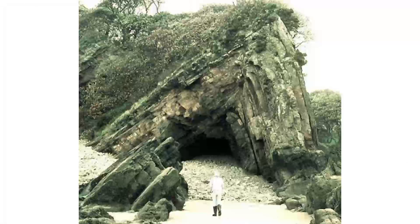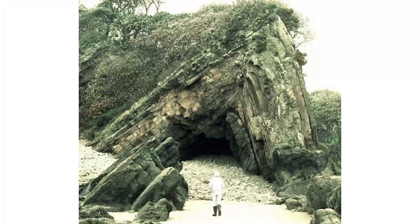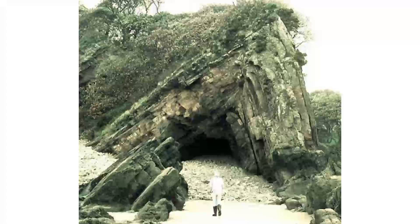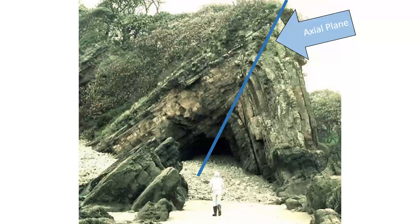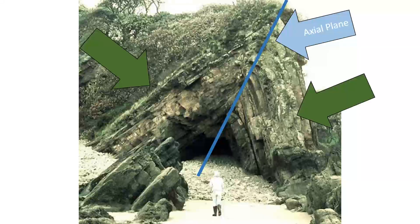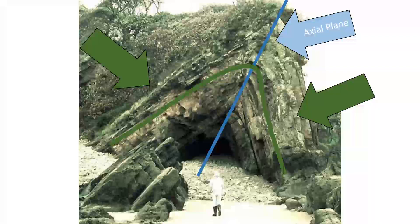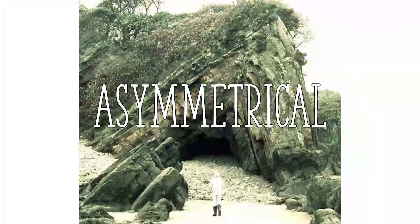Now that we've seen the idealized version of anticlines, let's see if you can figure out the kind of fold an anticline in the wild is. Here we have an anticline and a human for size reference. Can you see the axial plane? It's right there. So these are the limbs, and the angles are kind of like this. What would we call this fold? Did you guess asymmetrical? Nice job. Now you should be able to identify a fold axis on your own.